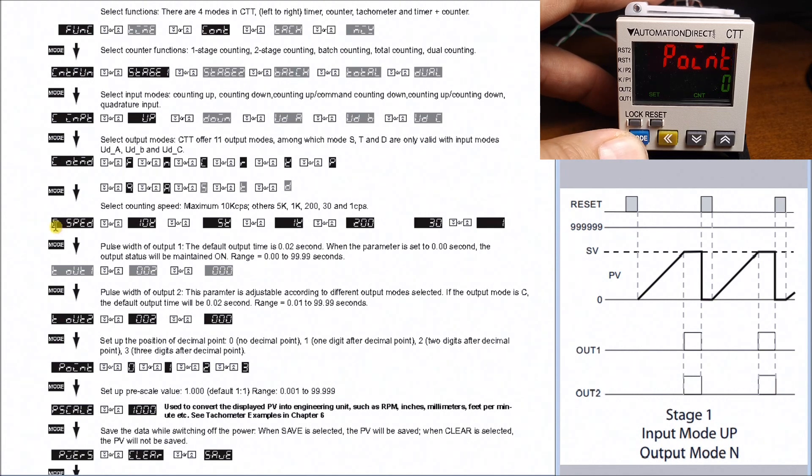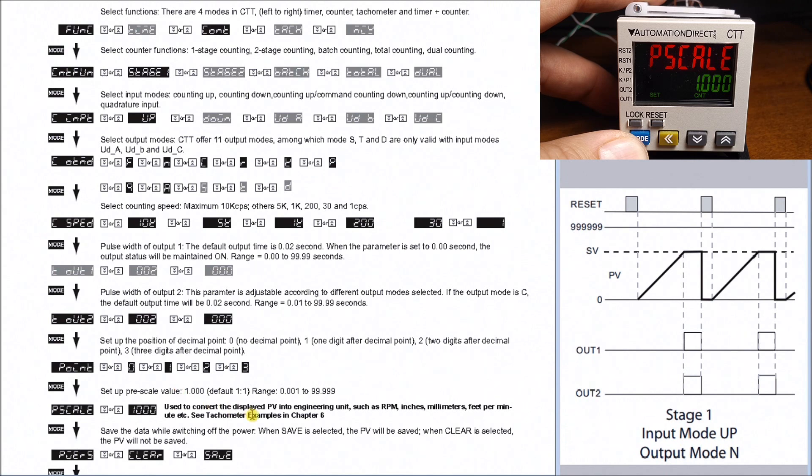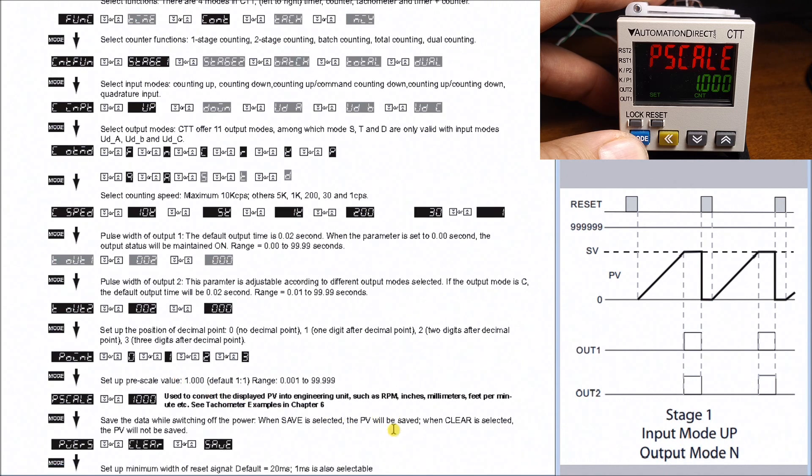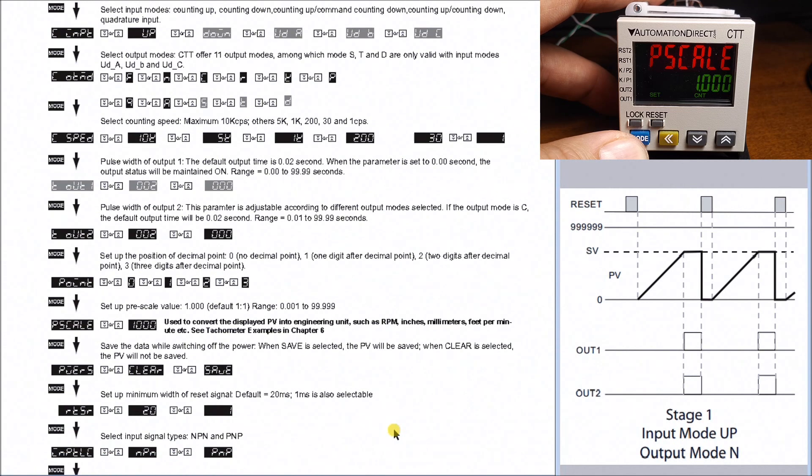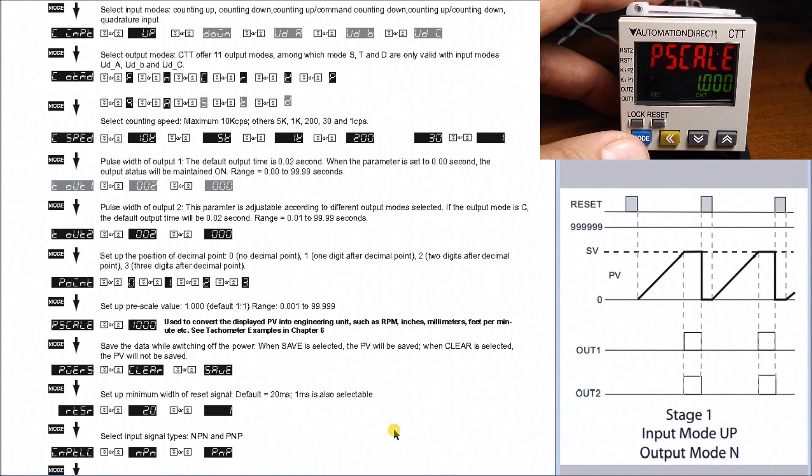Then this is our point or decimal point, and what this allows us to do is change the decimal point number to where we want on that unit. We have our pre-scale, and what that is used to do is to convert into a unit that you want to see displayed on your device. For example, if you're measuring distance, then you want to put in every pulse equals so much distance - you would have this as your pre-scale value that you put in here.